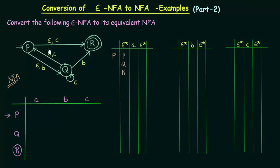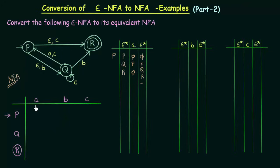Where does P go on input A? P on input A doesn't have any move, so it goes to Phi. Q on input A goes to P, and R on input A also doesn't go anywhere, so it is Phi. So this will be Phi, and P's Epsilon closure is P, Q and R. Since this is Phi there will be nothing here, so the final states we get are P, Q and R. That means P on input A will go to states P, Q and R in our NFA.